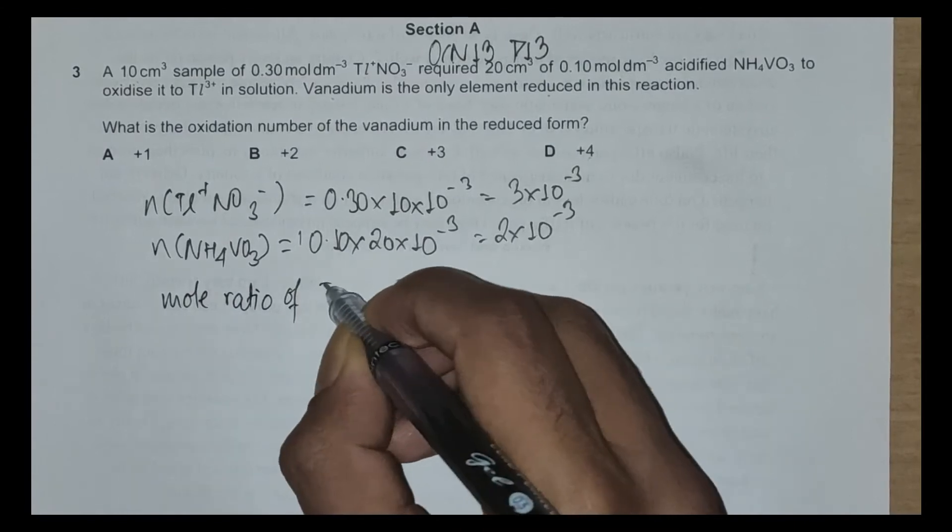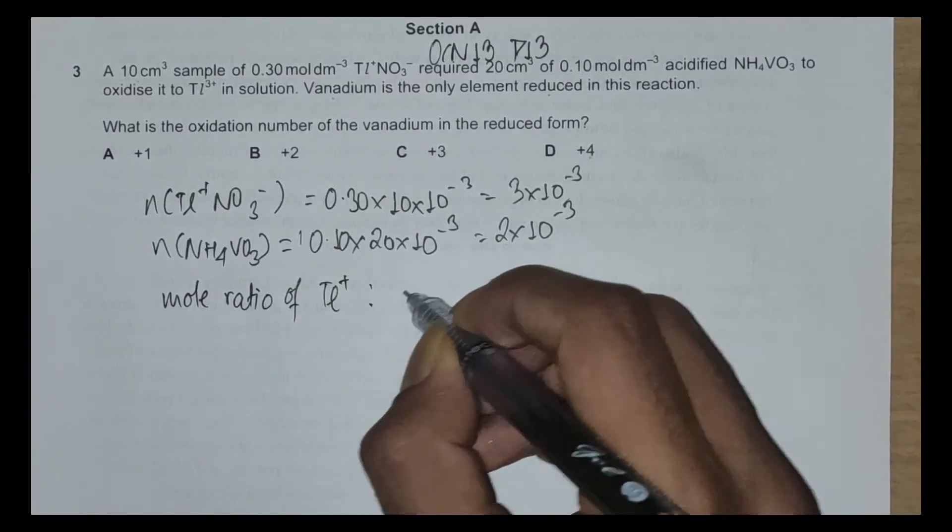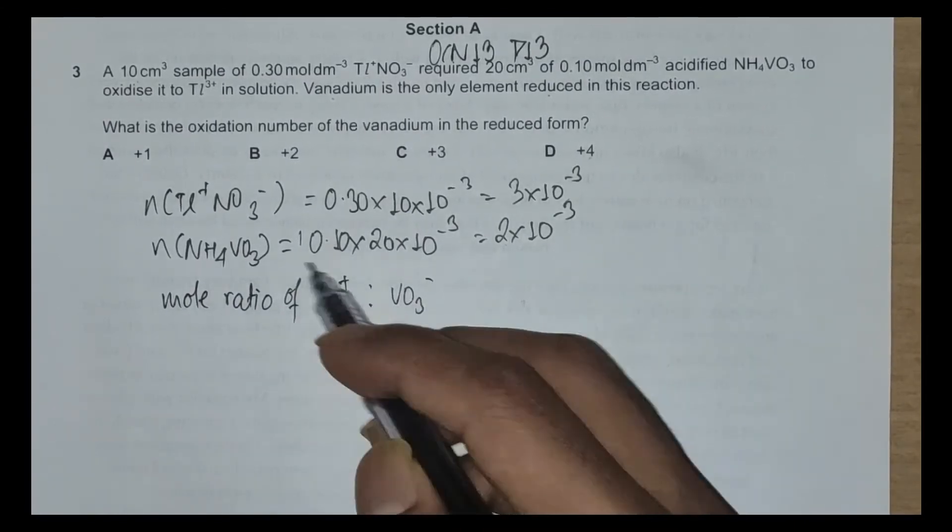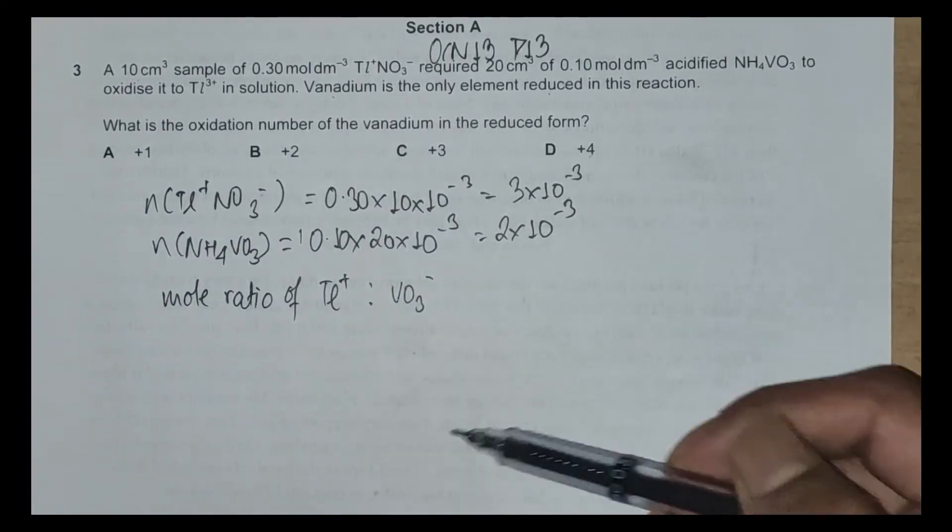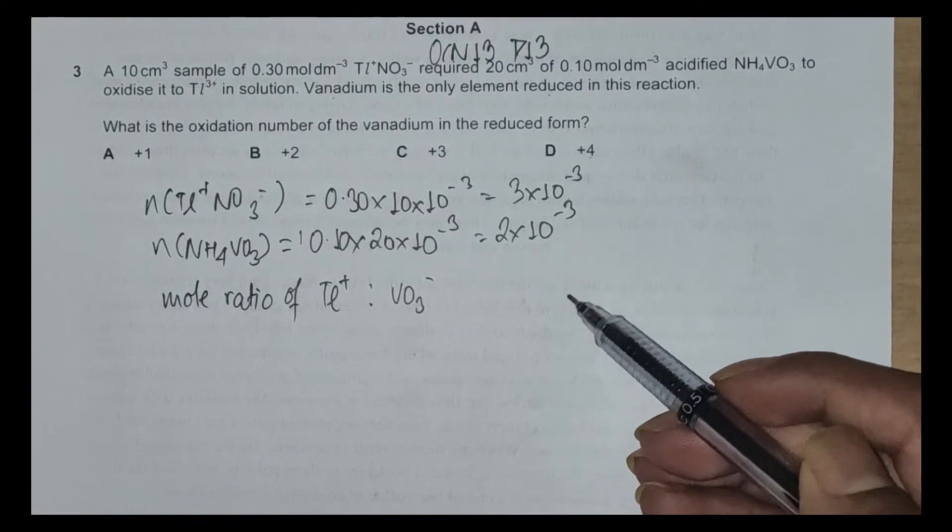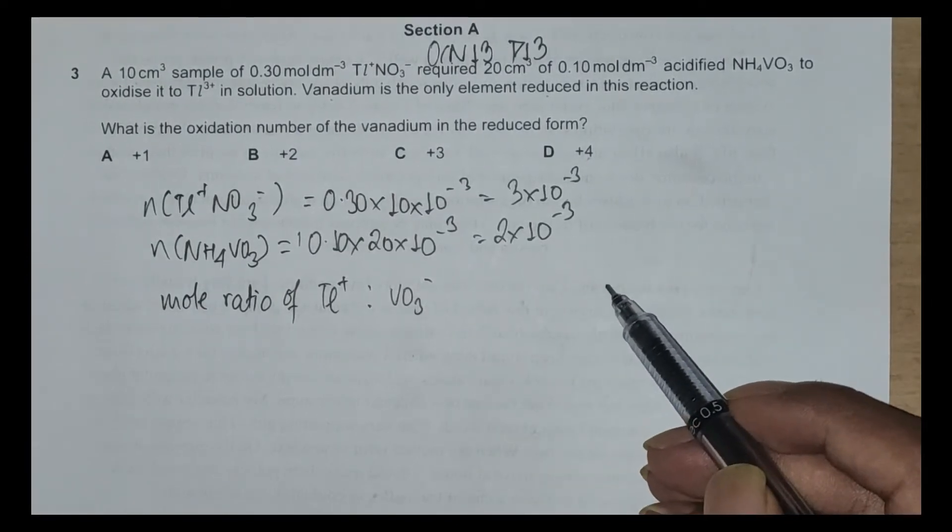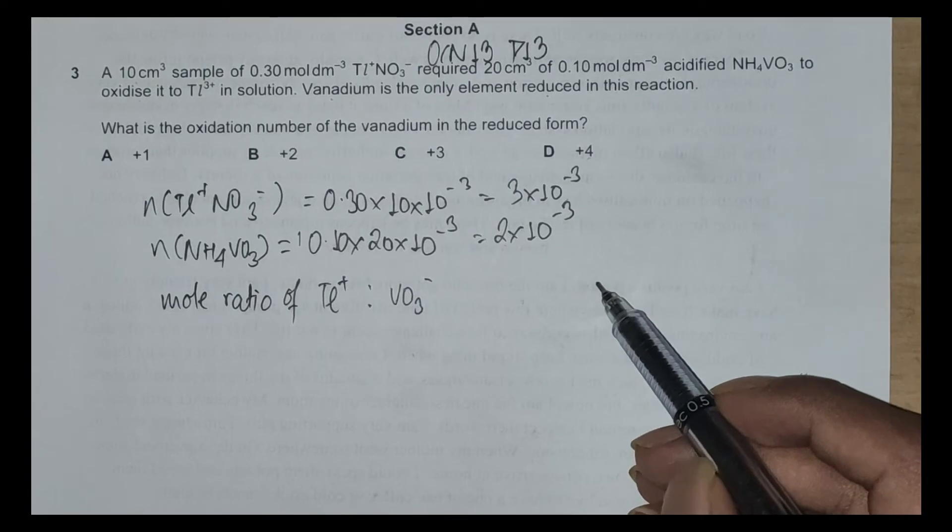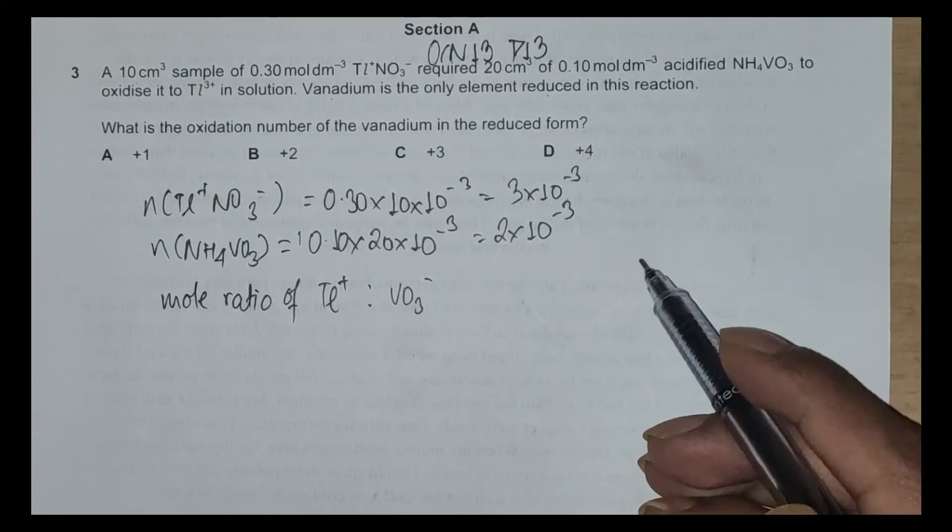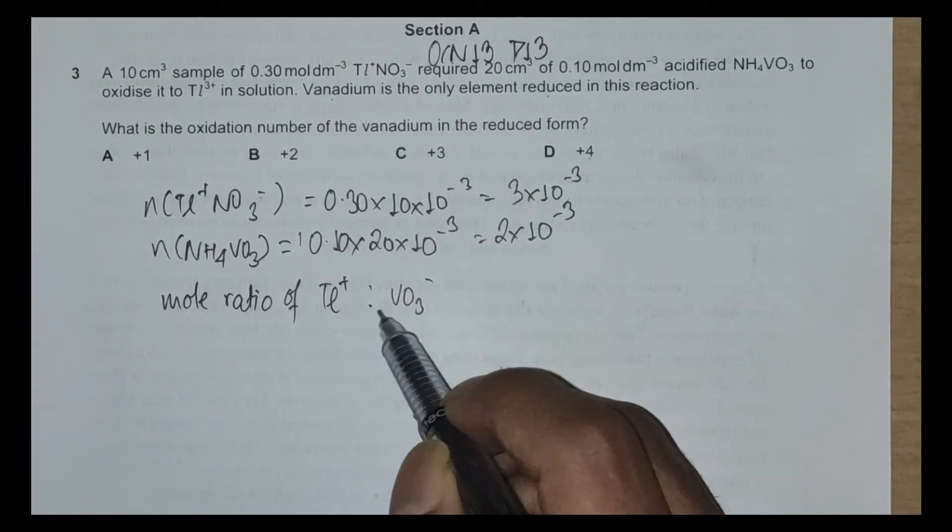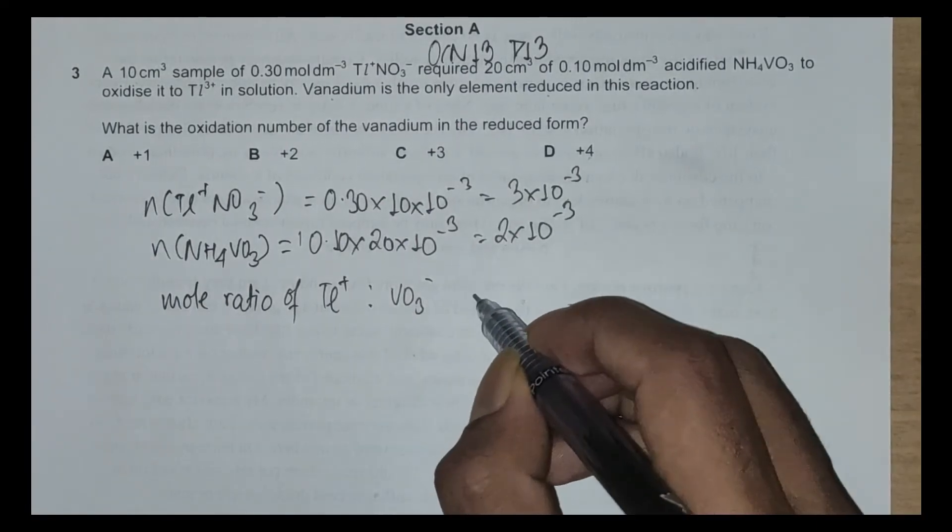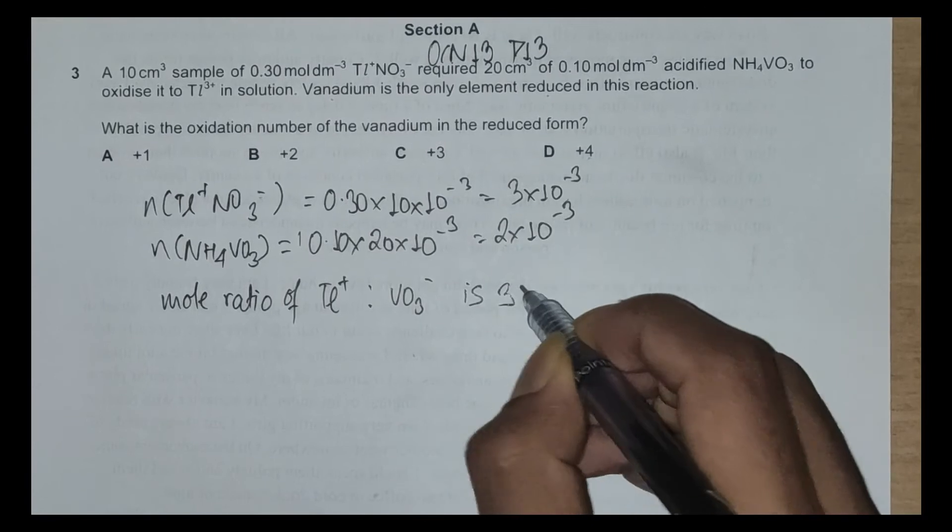So what we have is a mole ratio of TL⁺ to VO₃⁻. We can remove NO₃⁻ and NH₄⁺ in our further calculations because these are just spectator ions. They don't necessarily take part in the reaction, so we can remove them to make our life easier. The mole ratio of TL⁺ to VO₃⁻ is 3 to 2.